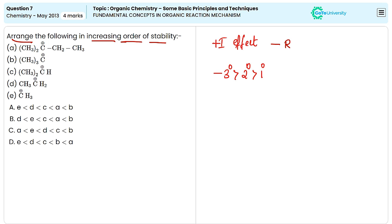And the least stable one will be primary which contains only one methyl group. And one more carbocation is there that is methyl carbocation. This will be again less stable than that of primary carbocation.